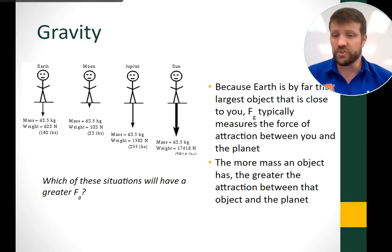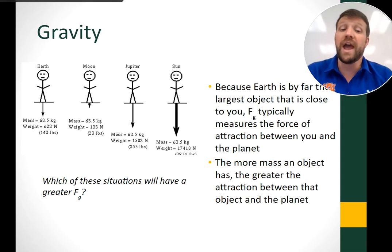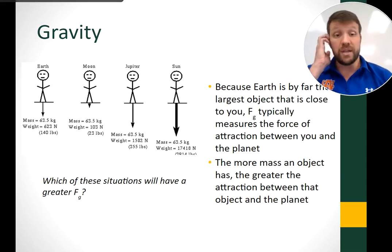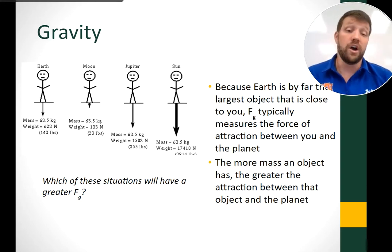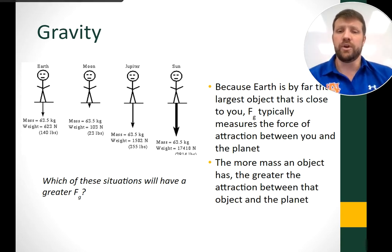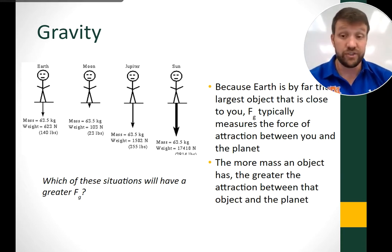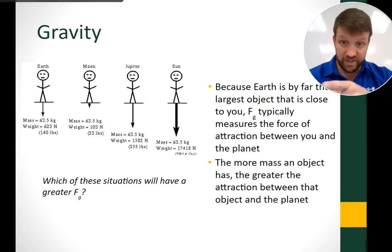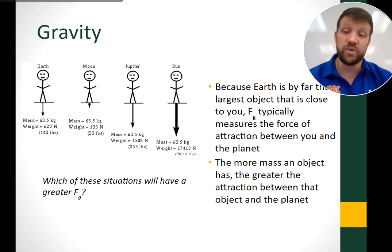Now, gravity — our simplest, most common force. Because Earth is by far the largest object close to you, the force of gravity measures the attraction between you and the planet. Everything with mass has some attraction toward other masses, but because Earth is so much bigger, everything on Earth is pulled toward it. A person has a different weight on Earth, Moon, Jupiter, and the Sun because it's an interaction between the person's mass and the planet's mass.